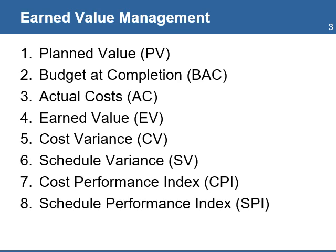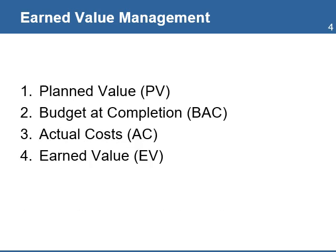EVM contains eight components that you need to be familiar with. Planned Value is the budget for a project, or the planned budget to be spent on a project during a given period of time. Planned Value for a specific date is the cumulative planned cost for each month between the start date and the status date.